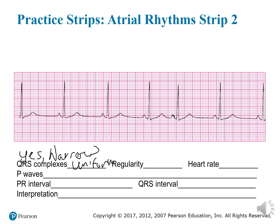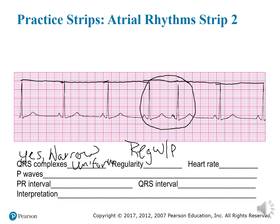Now to determine regularity — we go R to R again and figure out our intervals. But if you look right here, we have a premature beat. So we have regular with a premature beat.